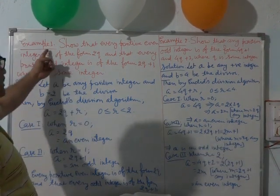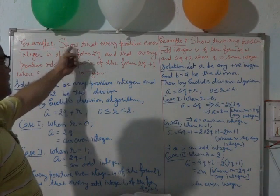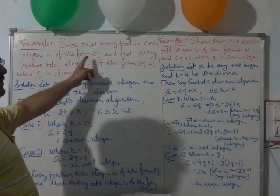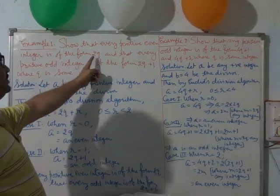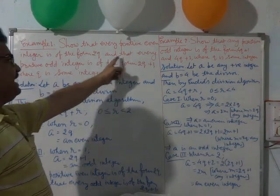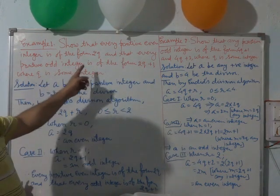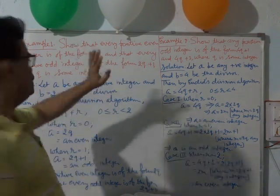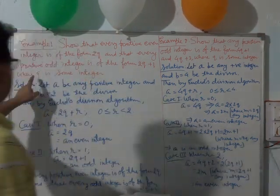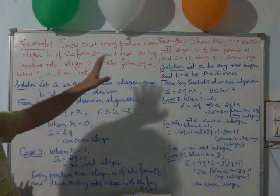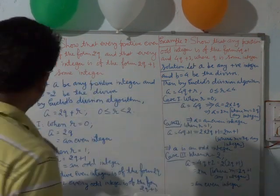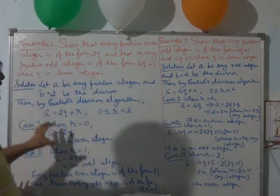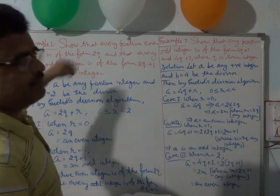The first example is to show that every positive even integer is of the form 2q, and that every positive odd integer is of the form 2q plus 1, where q is some integer. Now let us see how Euclid's division algorithm is applied in it.